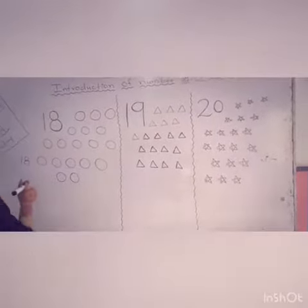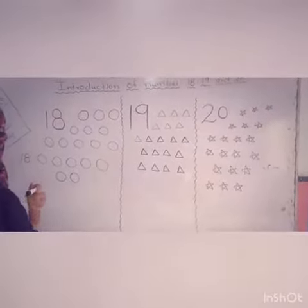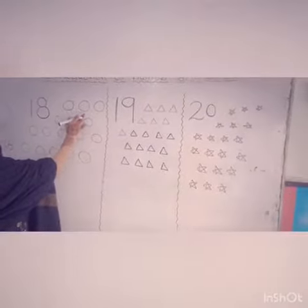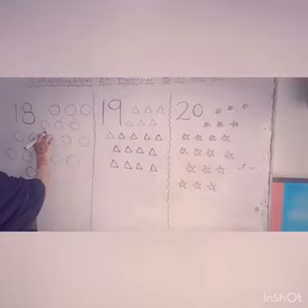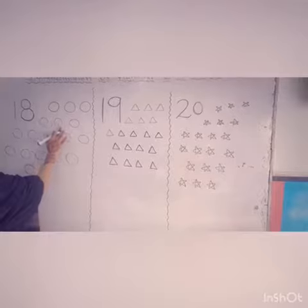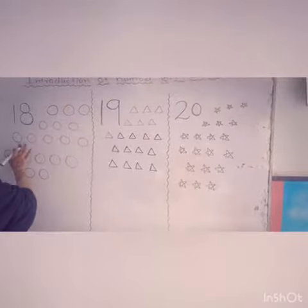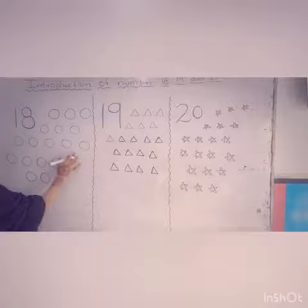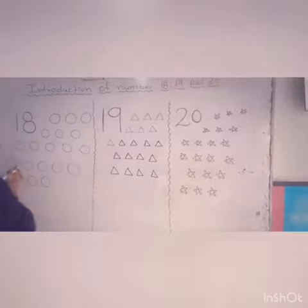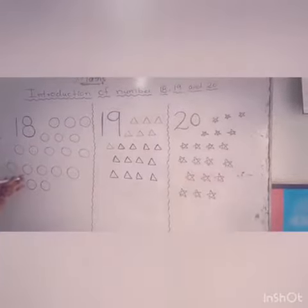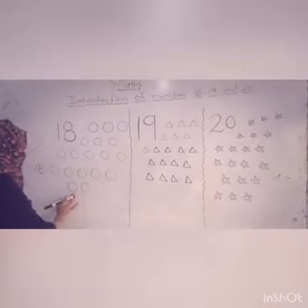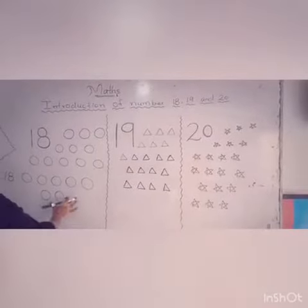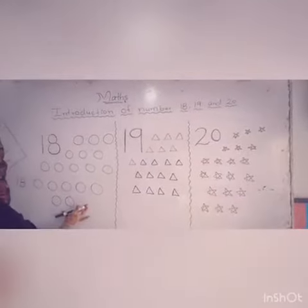Count the circles. How many circles are there? Count it. 1, 2, 3, 4, 5, 6, 7, 8, 9, 10, 11, 12, 13, 16, 17, 18. There are 18 circles.